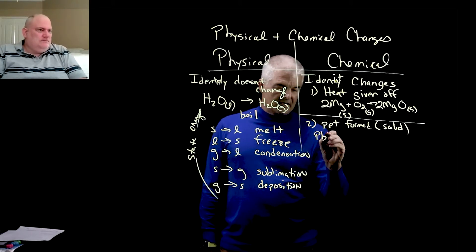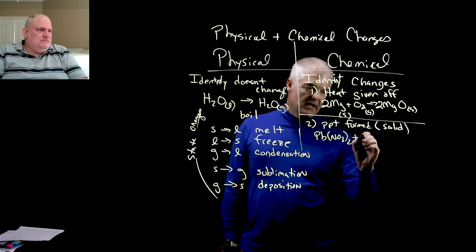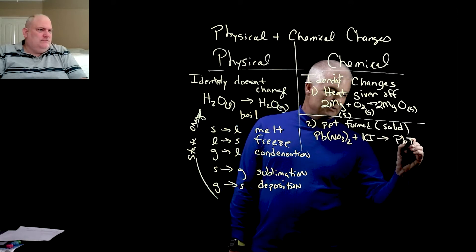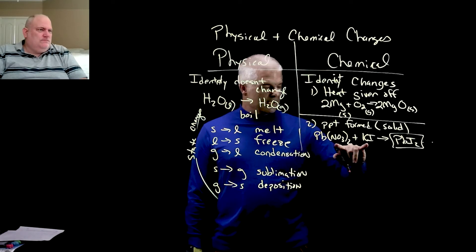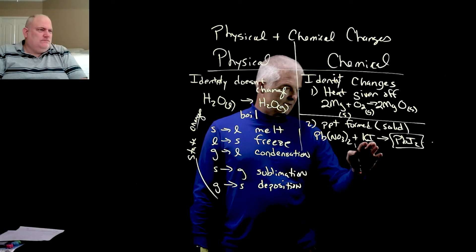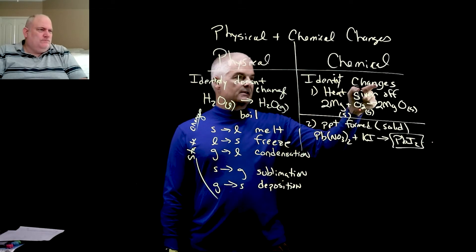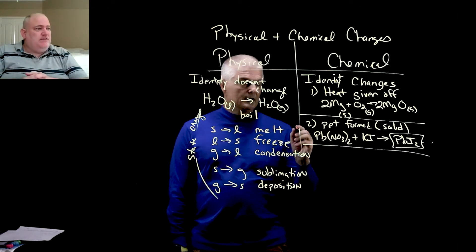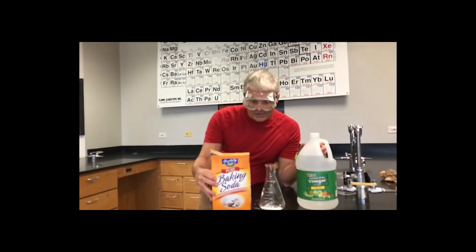So folks, in that case we had Pb, which stands for lead nitrate NO3, and we had this thing called KI. And the key thing I'm going to write down may be PbI2. That was the white powder we saw, and some other things. But notice it isn't the same thing. This and this become this and something else. So it's changed what it is. Identity changes, right? Number three: gas is given off or evolved, we like to say.